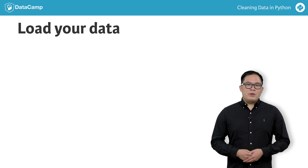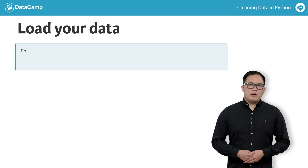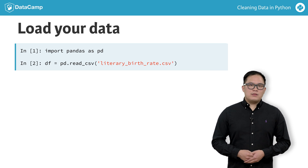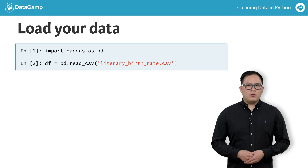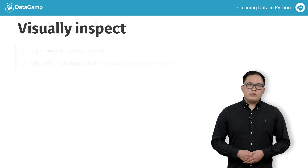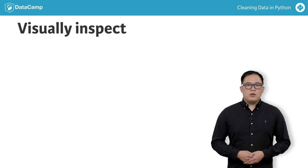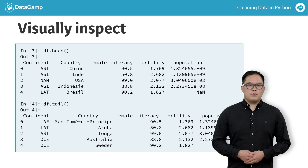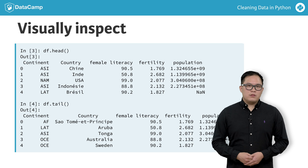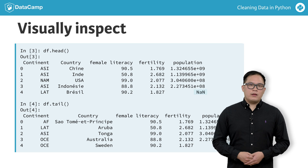To load the data, we begin by importing the pandas library with the standard alias PD. The read_csv function takes a file name and loads it into a data frame called DF. We can visually inspect the first and last five rows of our data frame using the head and tail methods, respectively. Here we see the column name inconsistencies, missing data, and columns that need to be further processed.